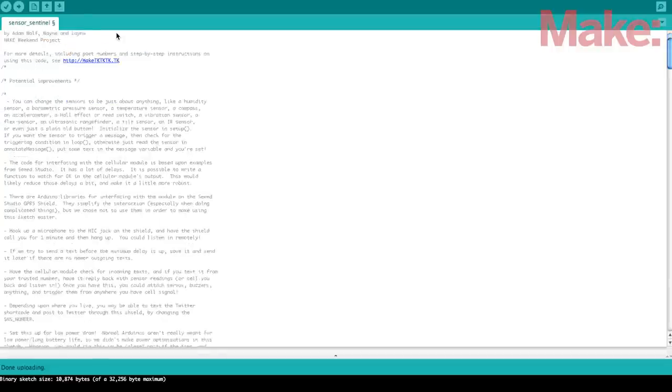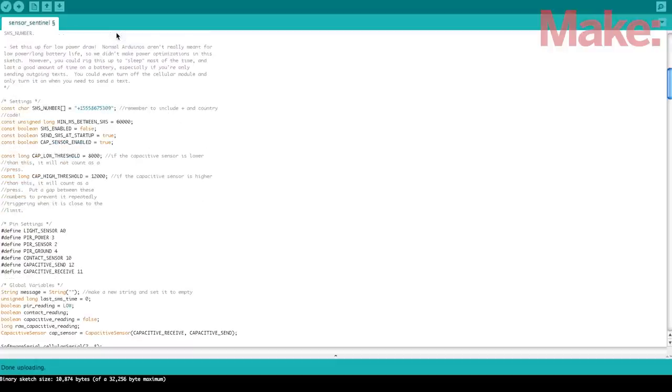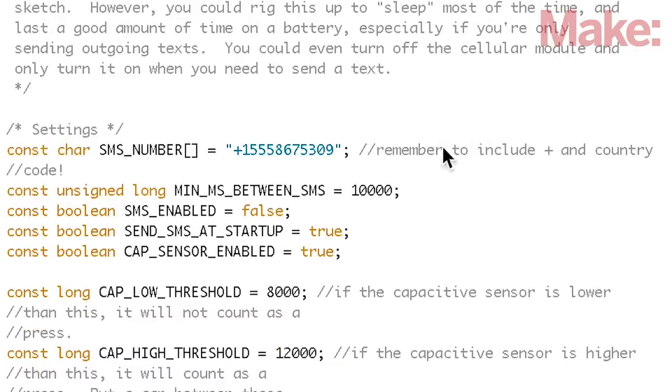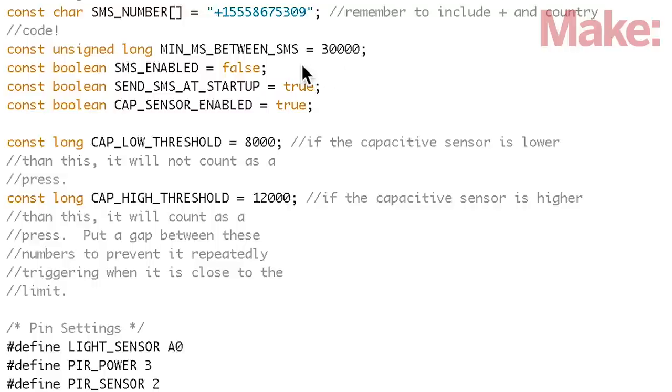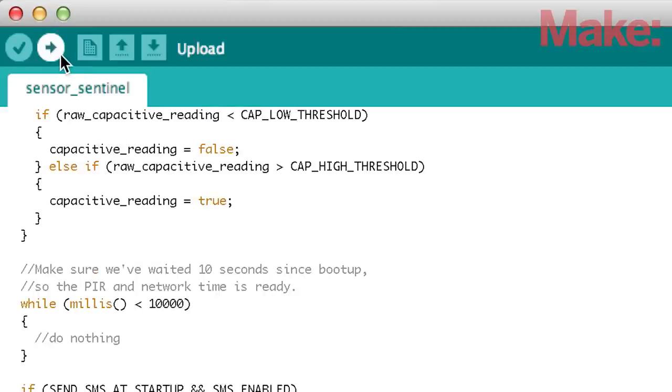The last step is to test the cellular functionality. Set SMS number to a valid outgoing phone number. You'll also need to replace the default phone number with the number of the phone you want to receive the texts when the sensor sentinel is activated. Confirm that Min MS between SMS is relatively high. How high? Let's start with at least 30,000 milliseconds, which is 30 seconds. This will prevent a potentially expensive flurry of text messages if something goes wrong with the sensors. Finally, set SMS Enabled and Send SMS at Startup to True to enable texting. Then re-upload the code to your Arduino.